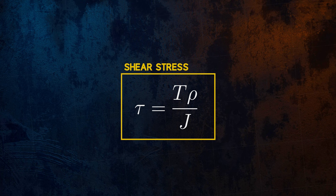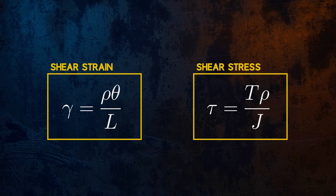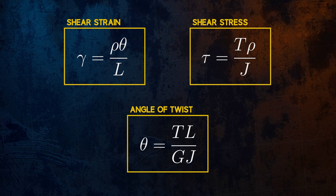So we now have equations that allow us to calculate the shear strains and shear stresses. We also have the equation for angle of twist that we talked about earlier. These three equations tell us everything we need to know about a circular bar which is under torsion.